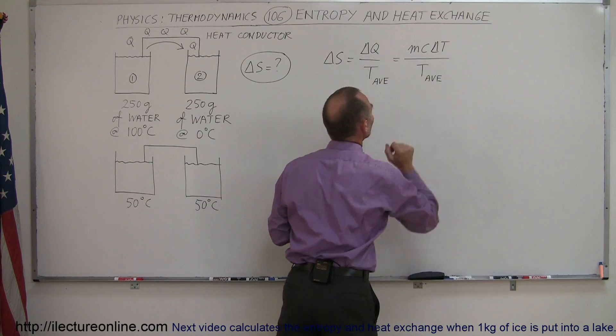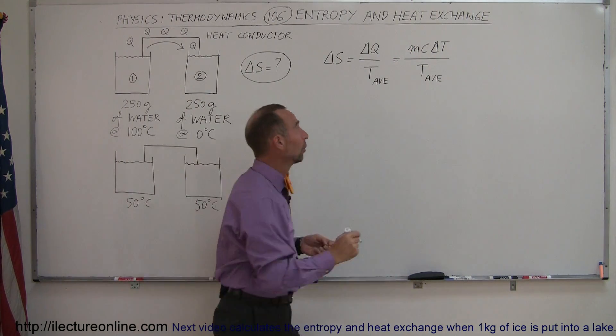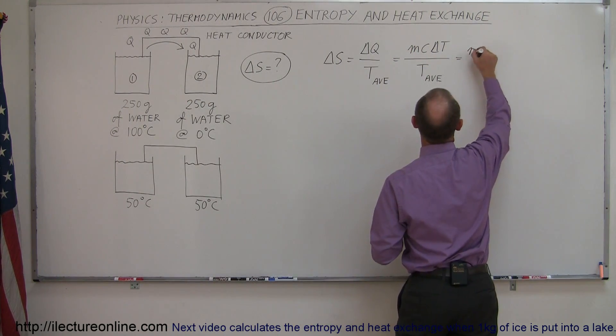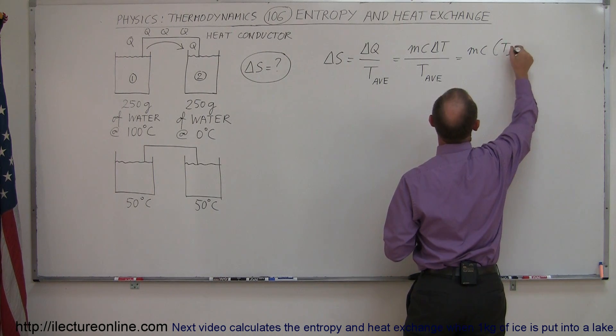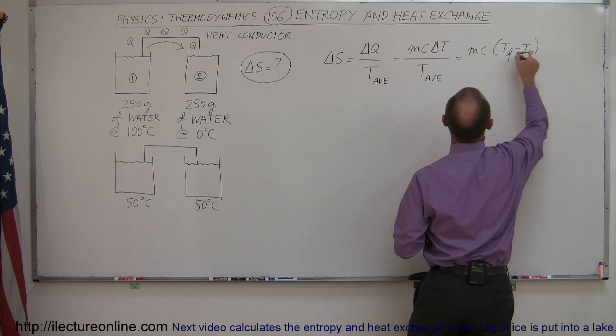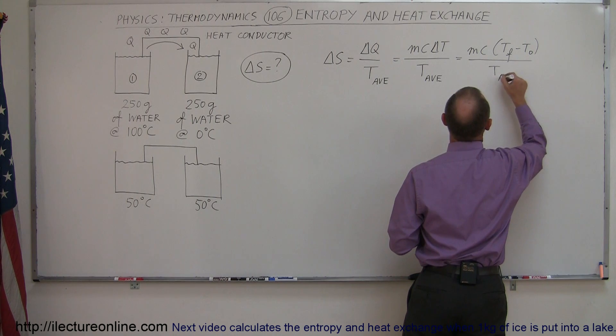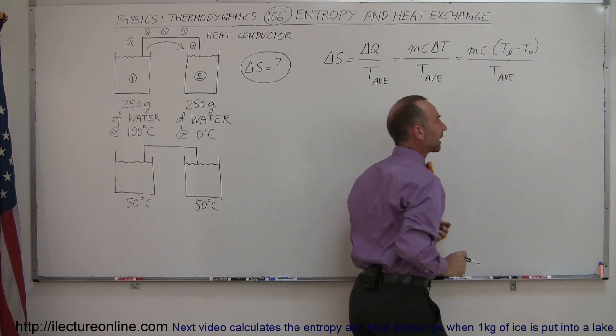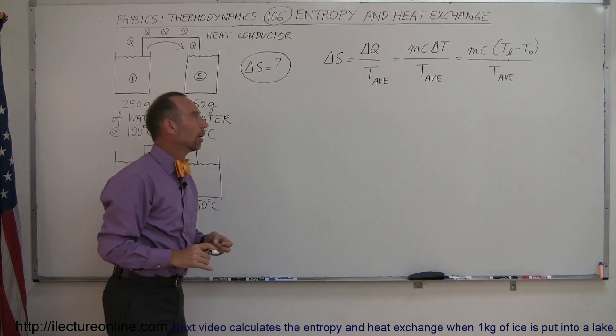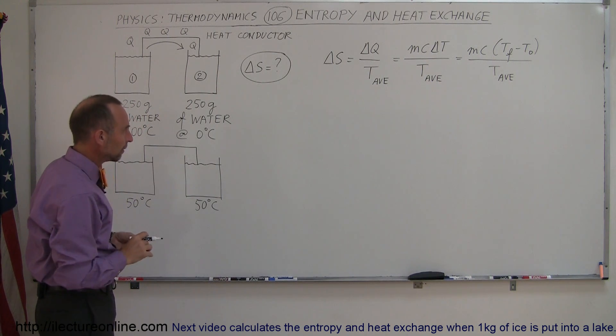So we can think about that and say, okay, we don't need to worry about that if we just strictly stay with the proper delta T. In other words, we're going to write this as MC times T final minus T initial divided by T average, and then that will automatically give us the negative of the heat exchange.